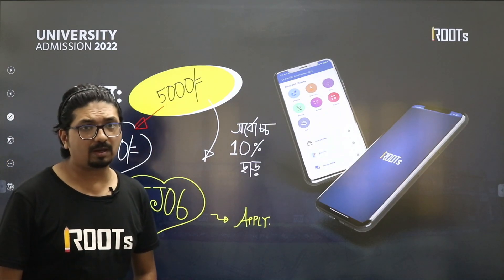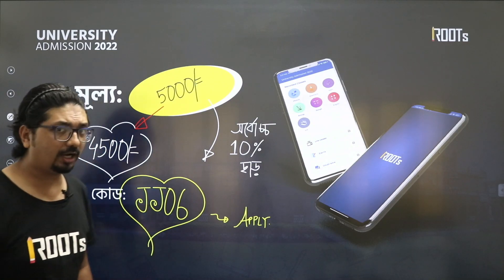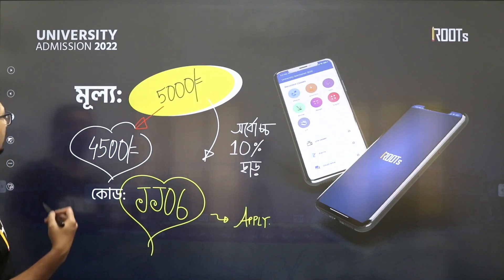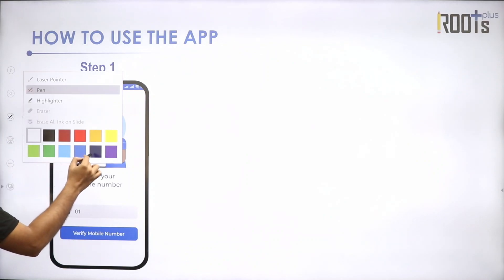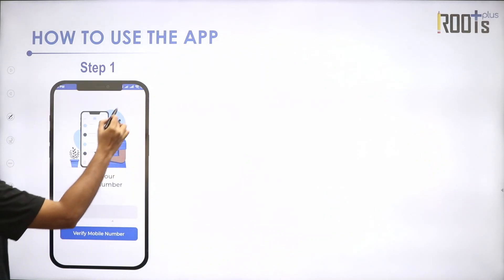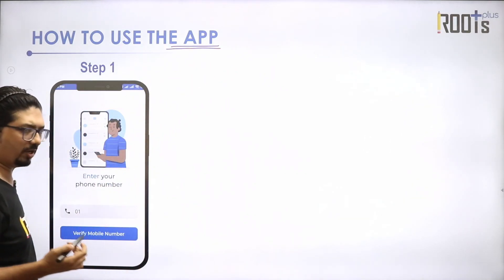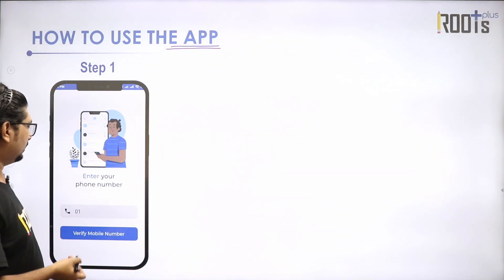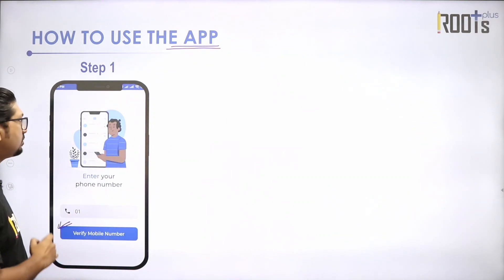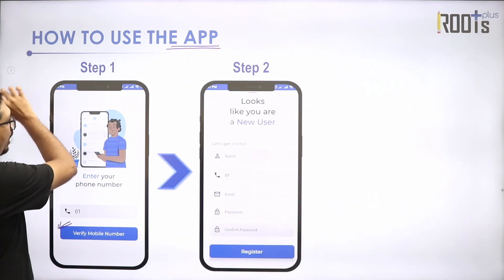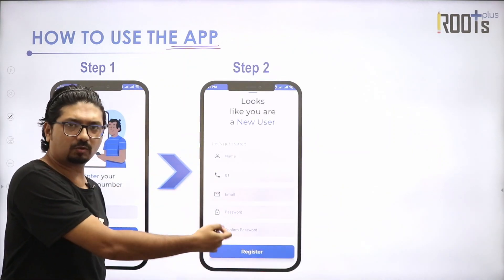You are a regular student — you know the enrollment process. If you are not done, the first thing is: go to Google Play Store and download the Rootsedu app. Search for the app. Then do your phone number and verify it. Enter your name, phone number, mail ID, password, and complete registration.